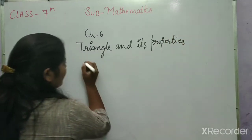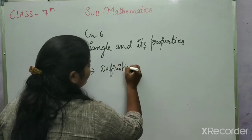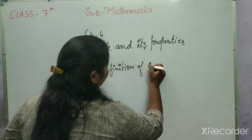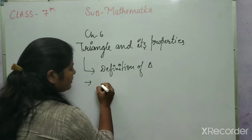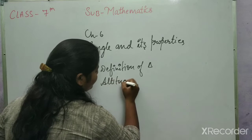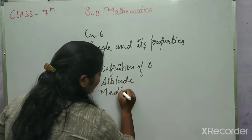In this chapter, we learn Definition of Triangle. Some terms related to Triangle that is Altitude, Median.